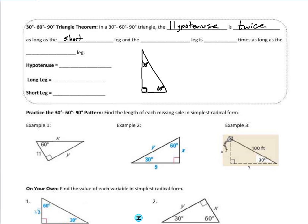And the long leg is square root of three times as long as the short leg. So all these lengths are all based off of what the short leg is.